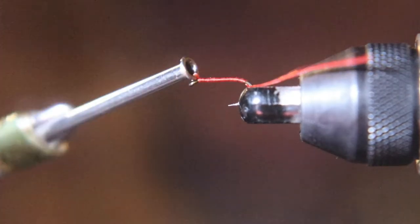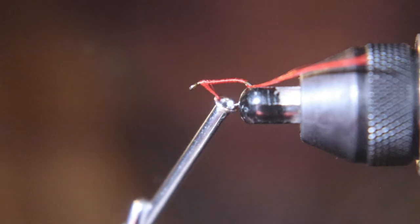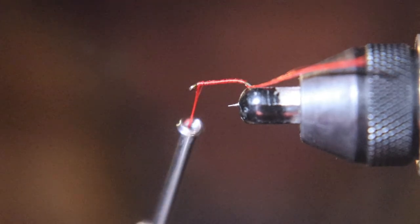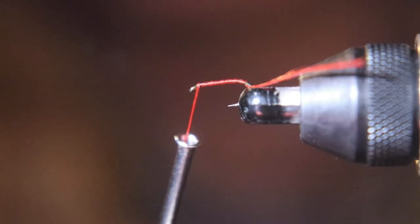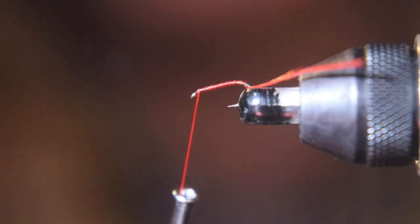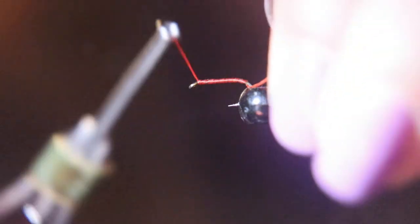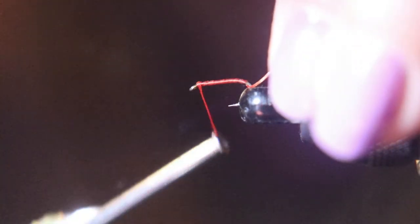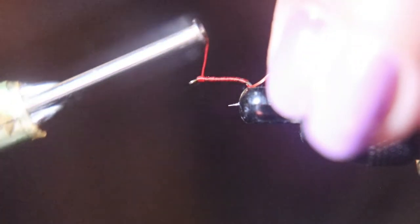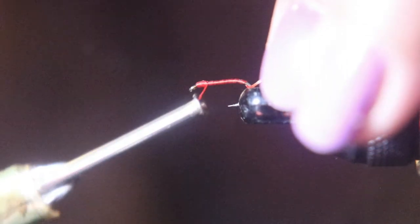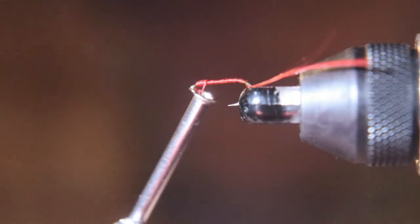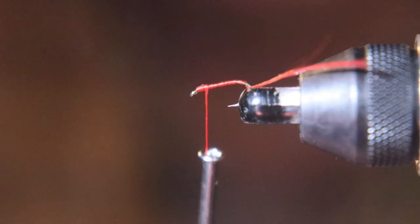This fly is known as a bloodworm fly. This fly is a great fly to help new fly tiers with thread control by getting them to lay each thread wrap side by side.